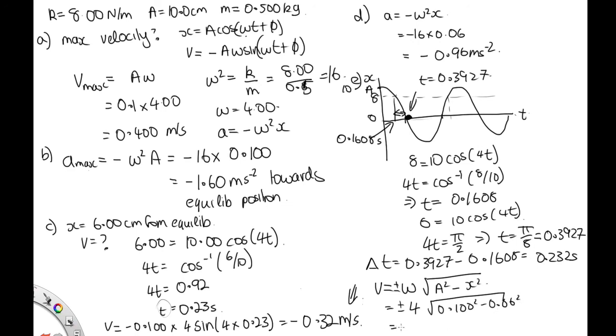Solving this on the calculator, we end up with plus or minus 0.32 meters per second, which is what we got here. So that's a faster way of doing it.